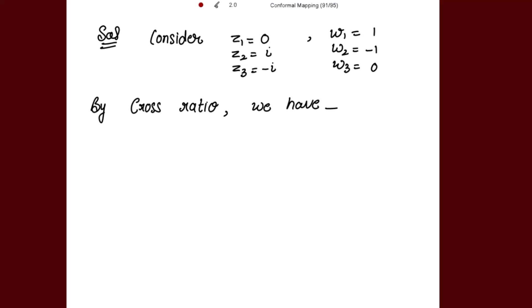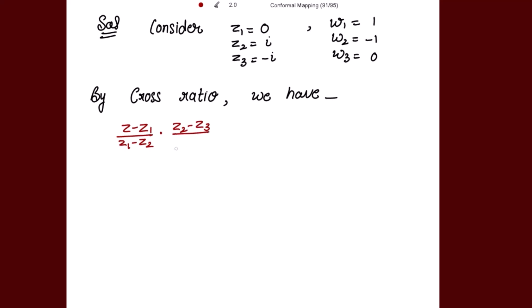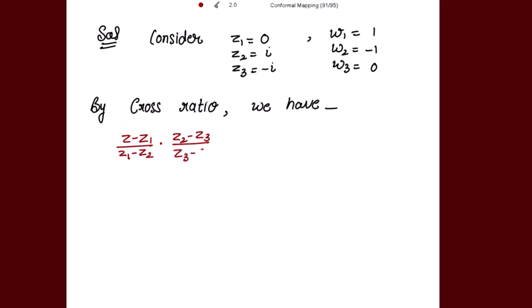We have the formula: (z - z1)/(z1 - z2) · (z2 - z3)/(z3 - z) = (w - w1)/(w1 - w2) · (w2 - w3)/(w3 - w).